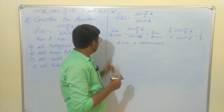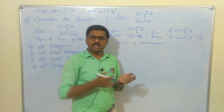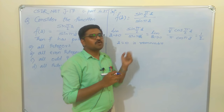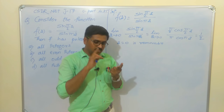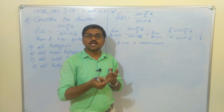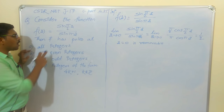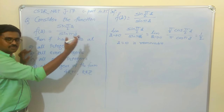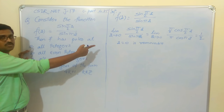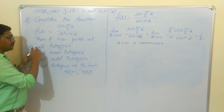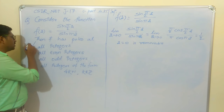Since the limit at z=0 exists and is finite, z=0 is a removable singularity — not a pole. But the question asks about poles, so we don't count z=0 as a pole. This also means we can discard Option A (all integers), because 0 is an integer and there is no pole at 0.